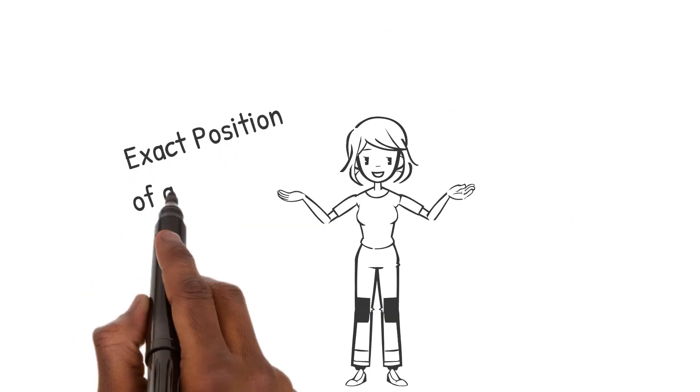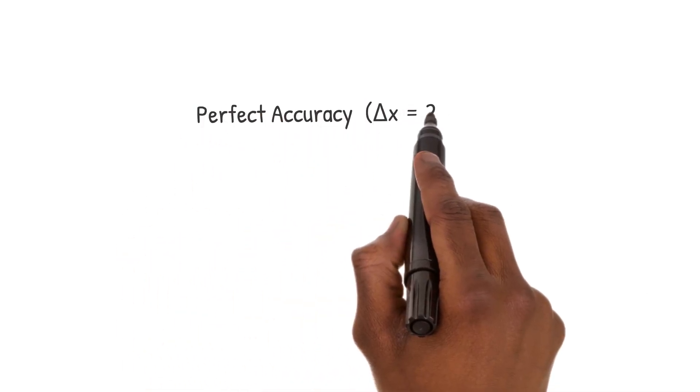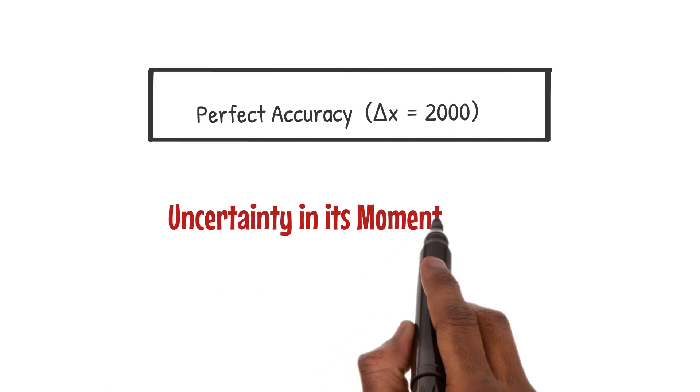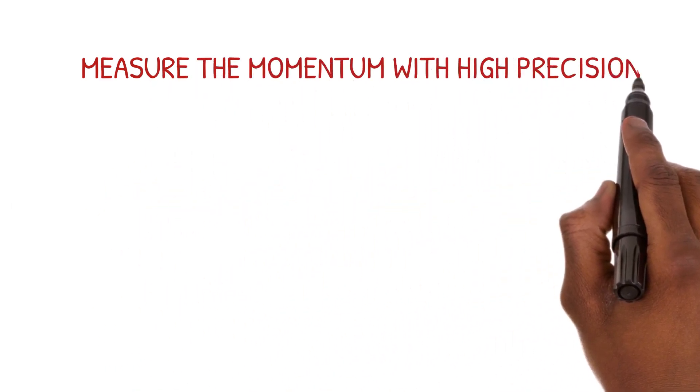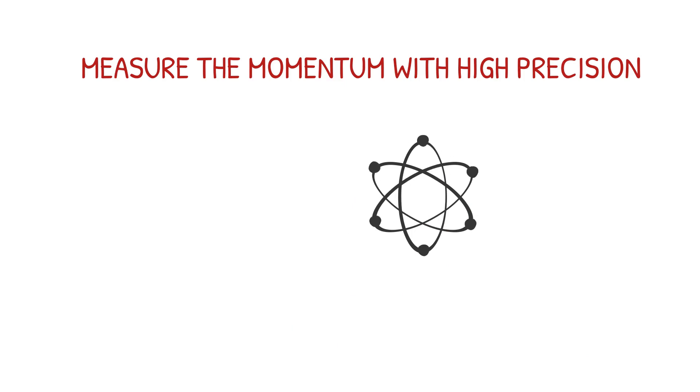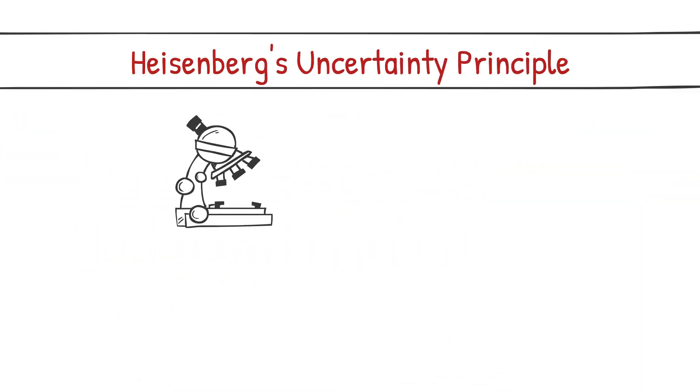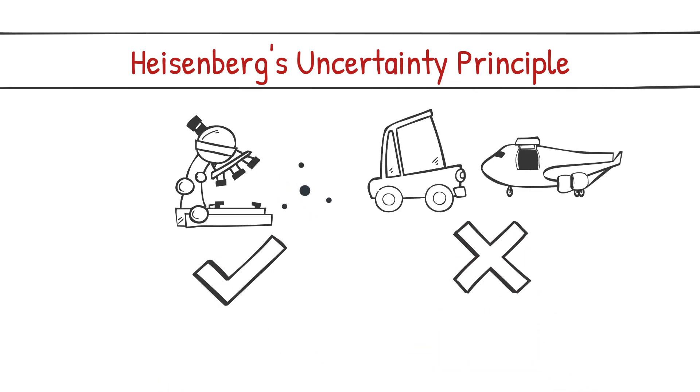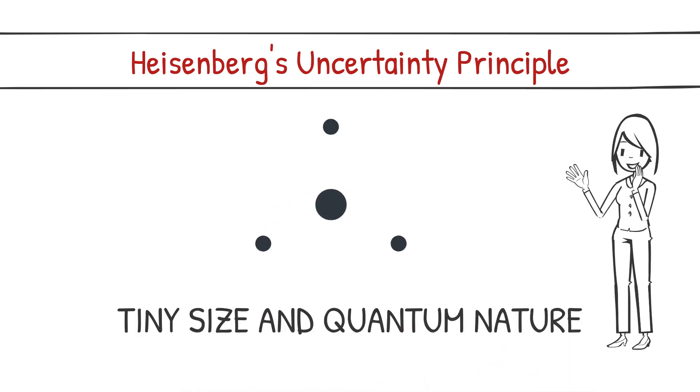Imagine you want to know the exact position of an electron. If you measure it with perfect accuracy, delta x equals zero, the uncertainty in its momentum, delta p, becomes enormous. On the other hand, if you measure its momentum with high precision, the electron's position becomes highly uncertain. It's a trade-off we can't avoid. Heisenberg's uncertainty principle applies to the microscopic world of particles like electrons, not to macroscopic objects like cars or airplanes.